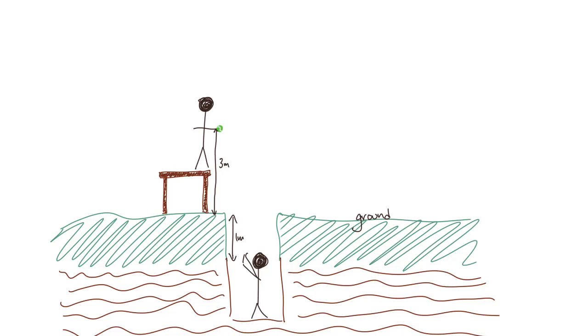Well, if we do this using our typical ground level being at the ground, we find that our potential energy is equal to mg times the change in height, which is equal to 3 times mg minus negative 1 mg, which is equal to 4mg.